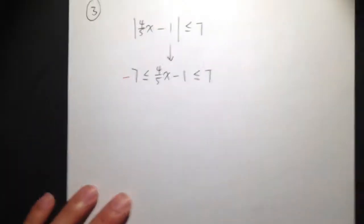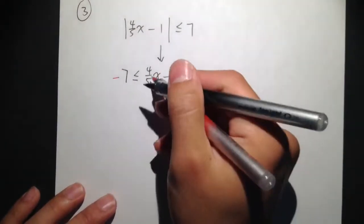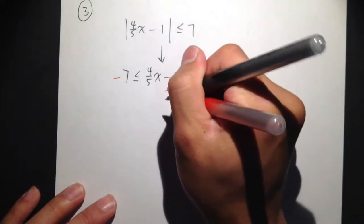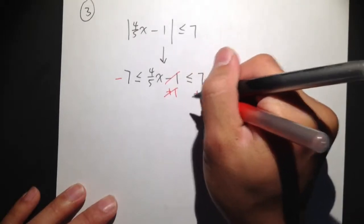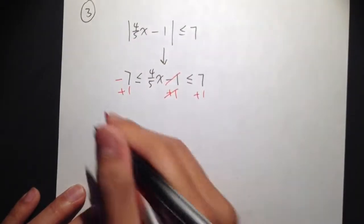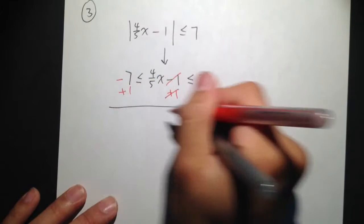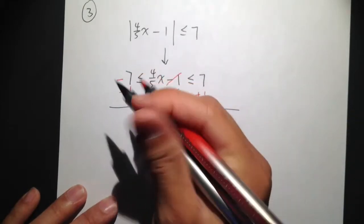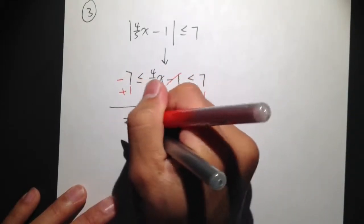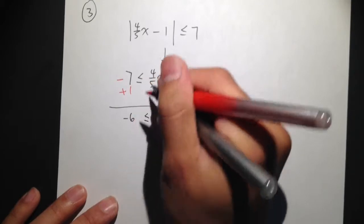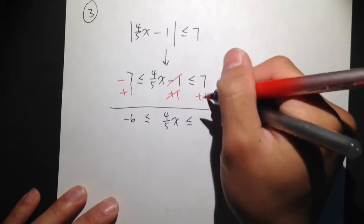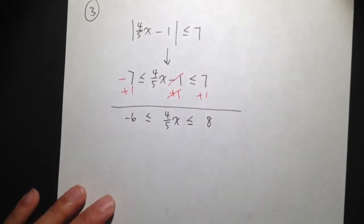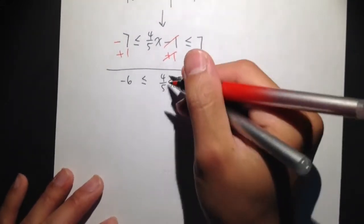Okay, now let's just solve this. 4 over 5x minus 1, I will need to add 1 to cancel out this minus 1, plus 1 here, plus 1 here, and also plus 1 on all three sides. Negative 7 plus 1 is negative 6, we have less than or equal to 4 over 5x, and then that's less than or equal to 7 plus 1, which is equal to 8.